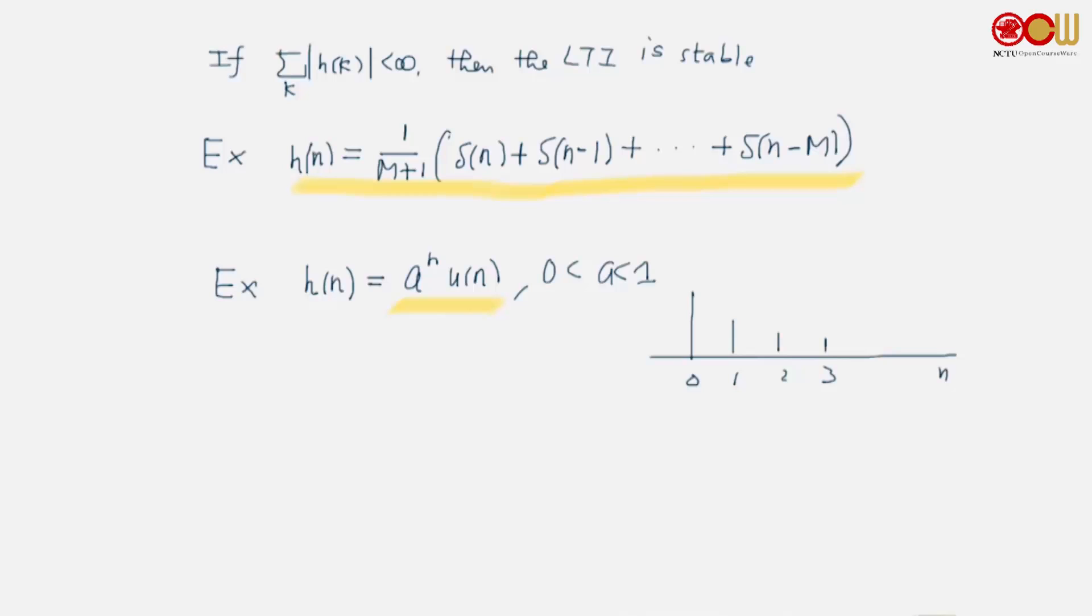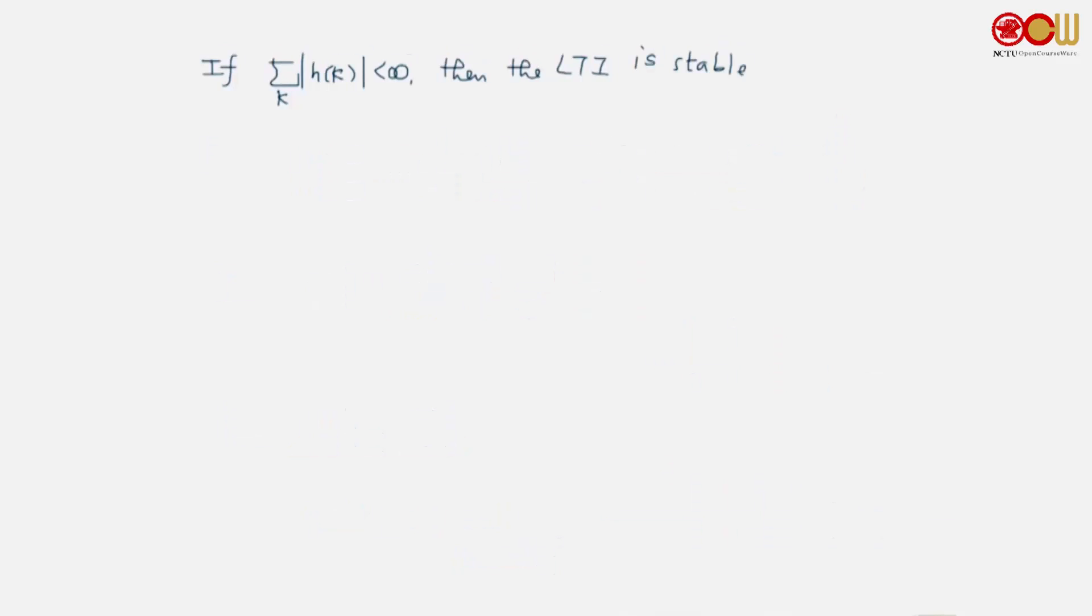Just now we said when h is absolutely summable, then the LTI system is stable. How about the converse? When the LTI system is stable, does it imply that this is true? This is the same as asking: suppose this is not bounded, is the LTI system not stable? What does it mean when an LTI system is not stable? If it is not stable in the BIBO sense, that means we can find a bounded sequence that produces an unbounded output.